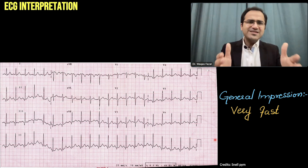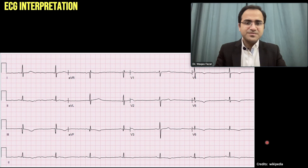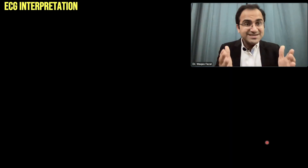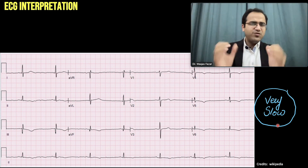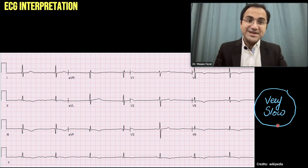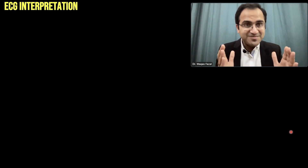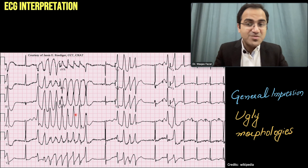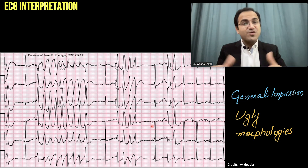Now going to the second ECG — look at it for 2-3 seconds and see what is your general impression. The general impression of this ECG is that it is a very slow rhythm. The first-glance impression is that it is a slow ECG. Moving to the next one: the first-glance impression should be that there are ugly morphologies present in the ECG — these are abnormal rhythms. So from the very first glance, we get an impression of ugly morphologies.